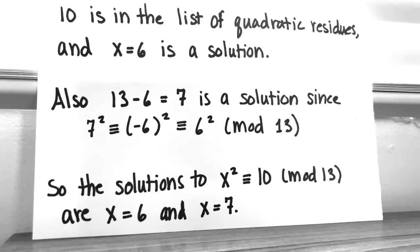But because of symmetry, we also can know that 7, because 7 is 13 minus 6, so 7 is congruent to negative 6 mod 13. So 7 is a solution as well. The solutions, if we're solving x squared congruent to 10 mod 13, we want to write out all of the solutions. And in this case, the solutions are x equals 6 and x equals 7.